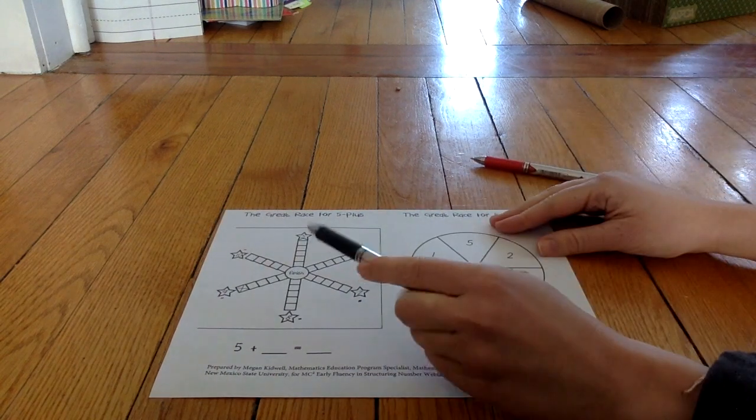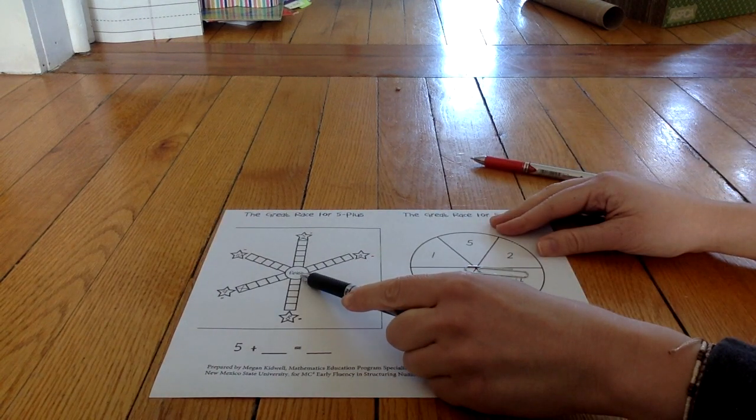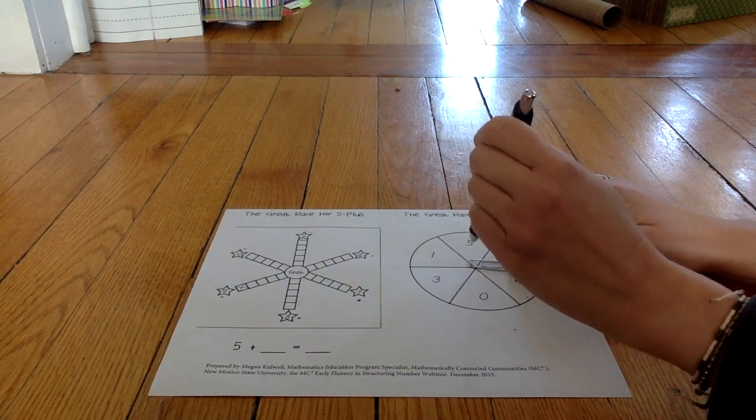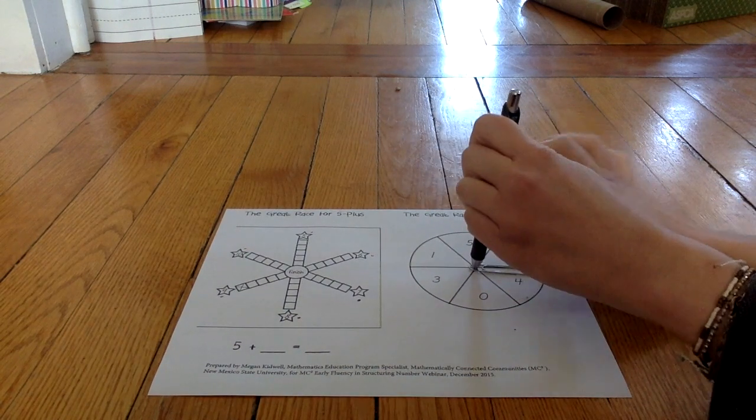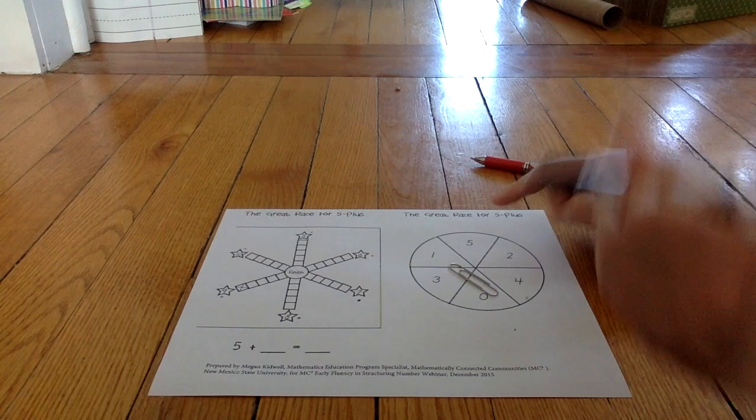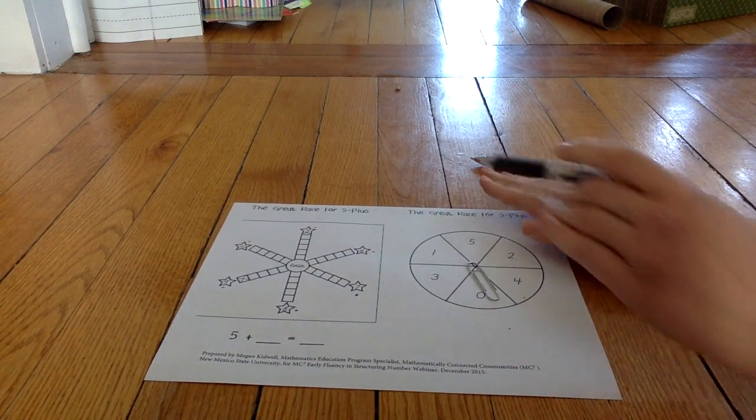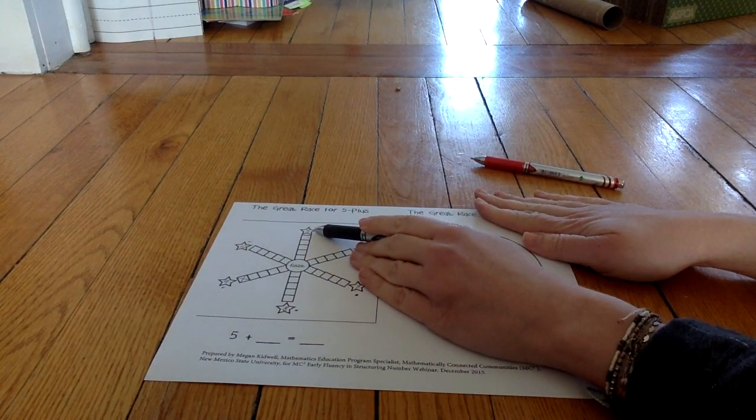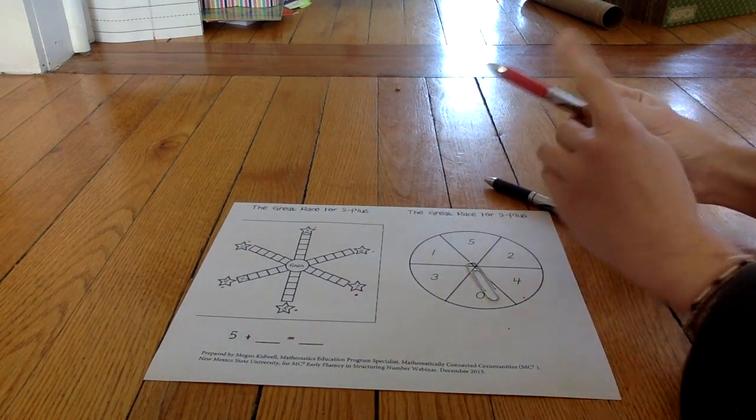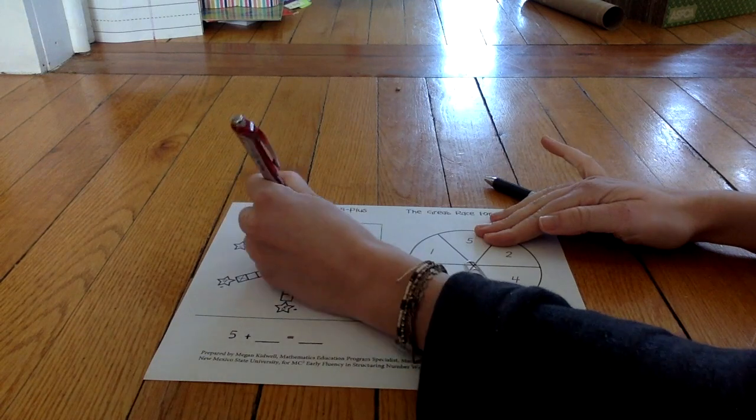Getting closer and closer to your finish. Now it's the next player's turn. Zero. Five plus zero equals five. So this player who has the five gets to mark an X.